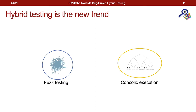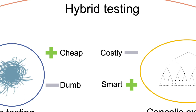Fuzzing has been the de facto software testing technique widely used in both industry and academia. It features cheap resource consumption per execution, but the trade-off is that it does not know much about the program under test. On the other side of the spectrum is symbolic execution, which features sophisticated analysis but with much larger resource consumption. Recently, researchers explored the smart combination of both, which we call hybrid testing. In hybrid testing, we use fuzzing to explore easy-to-reach code blocks most of the time, and when it stops making progress, we switch to concolic execution to help unblock the fuzzer by solving difficult branch conditions such as long magic number comparisons.